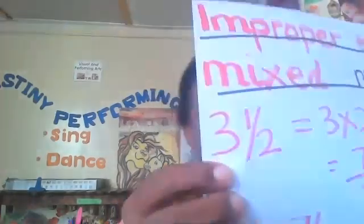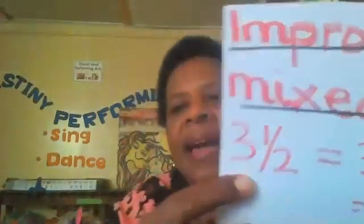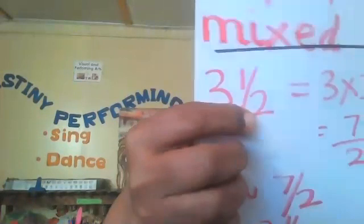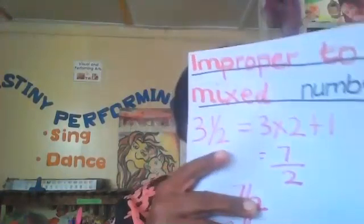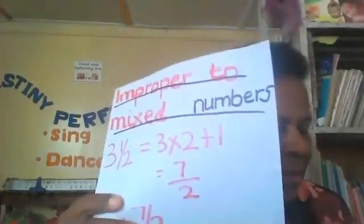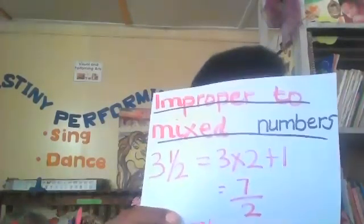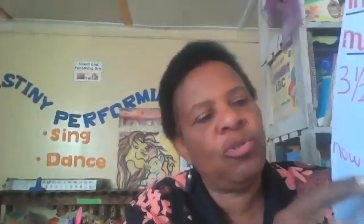We said improper fractions were numbers that have got whole numbers together with fractions. For example, we have three and a half. This three and a half is an improper fraction. Why? Because three is a whole number and half is a fraction, so it is a combination of a whole number with fractions.